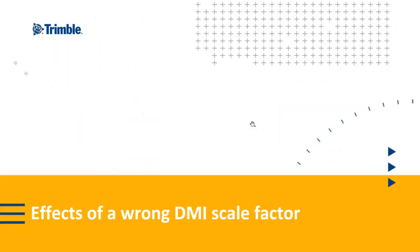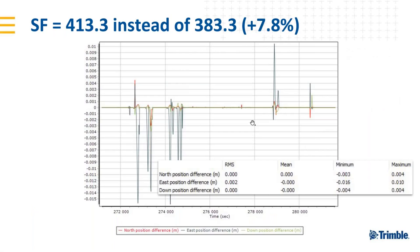The effect of a wrong DMI scale factor — in this example 7.8% off (413.3 instead of 383.3) — results in spikes of about −1.6 cm to +1 cm in the difference plot. This is considered considerable but not a huge difference. That concludes the DMI section.